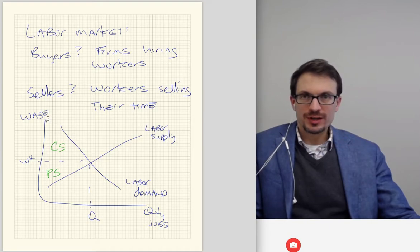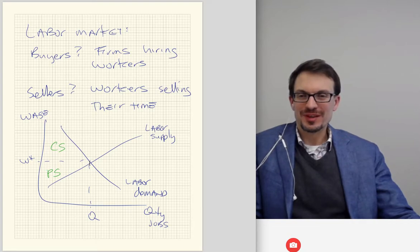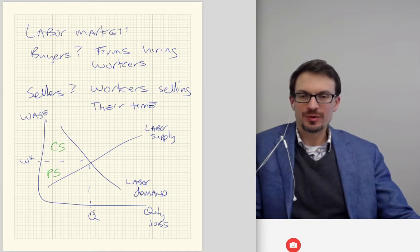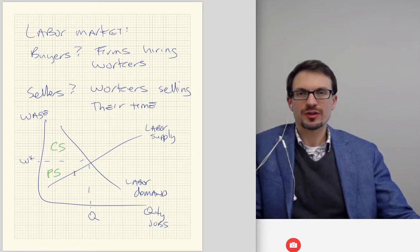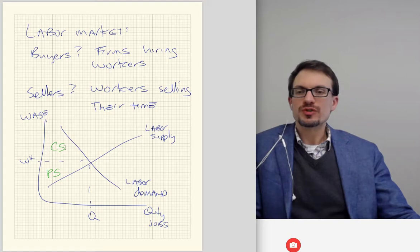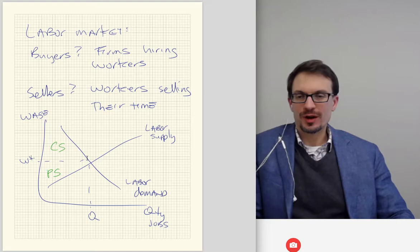So graphically, consumer surplus in the labor market is the area under the labor demand curve and above the price — which has a special name: wage. The equilibrium wage is W-star, and the equilibrium quantity of jobs offered and filled is Q-star. Producer surplus is the area under the price and above the supply curve — in this case, the labor supply costs to workers, like the opportunity cost of their time, corresponding to the minimum price at which they'd be willing to work. Consumer surplus here is the value firms get from hiring workers; producer surplus is the value workers get from agreeing to work.